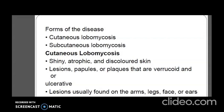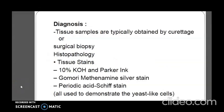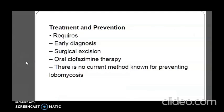There are two forms of the disease: cutaneous lobomycosis and subcutaneous lobomycosis. In cutaneous lobomycosis, shiny, atrophic and discolored skin is observed with papules or plaques that may be recurring or ulcerative. Tissue samples obtained by curettage or surgical biopsy can be examined by histopathology using 10% potassium hydroxide and Parker ink. GMS stain and PAS stain can also be used to demonstrate yeast-like cells. Treatment requires early diagnosis; surgical excision and oral clofazimine therapy are performed. There is no current method known for preventing lobomycosis.